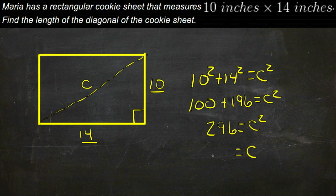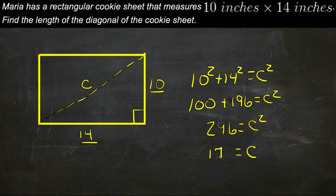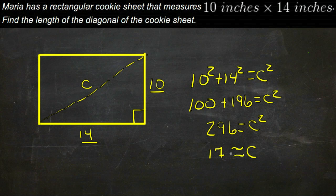C will be the square root of 296, which is about 17 and a little bit. So the diagonal of this tray then would be about 17 inches.